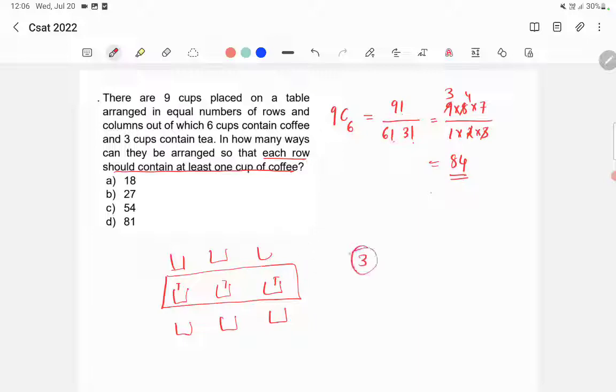So there are three conditions or possibilities in which there won't be a cup of coffee in one row.